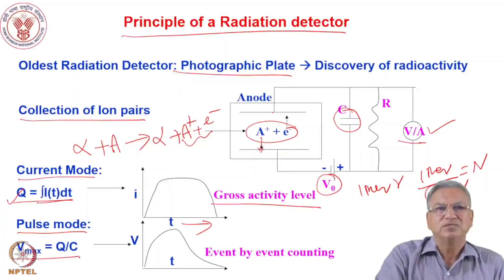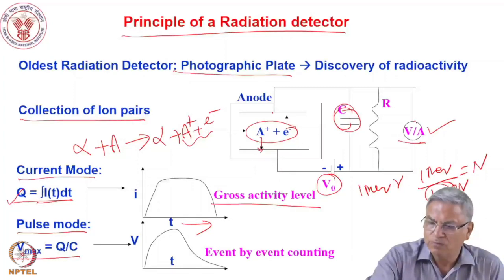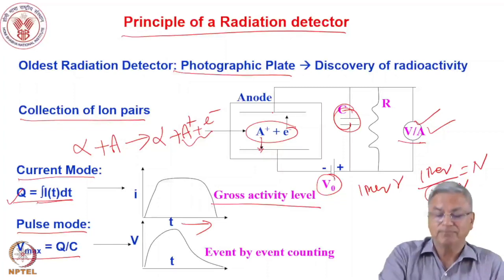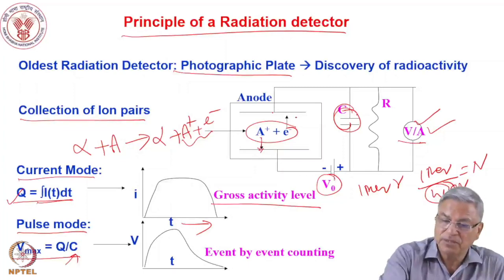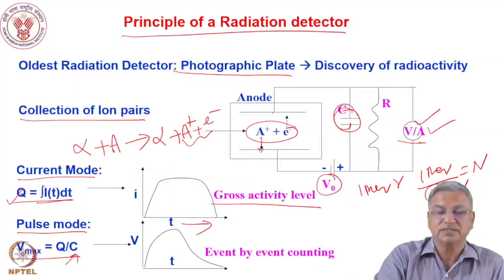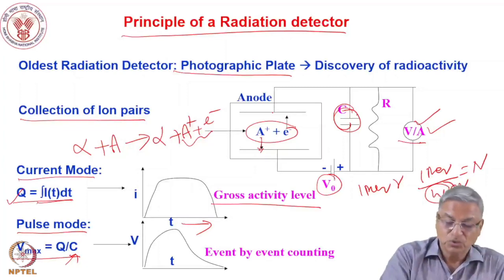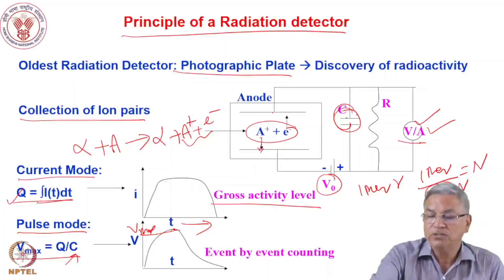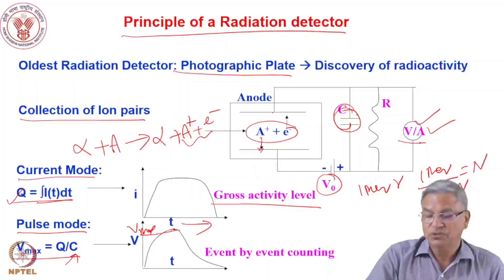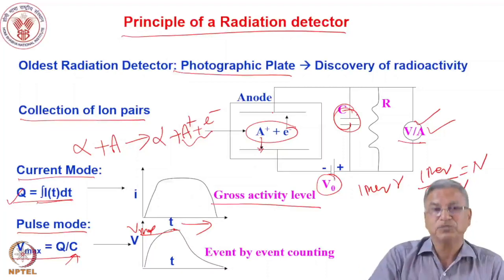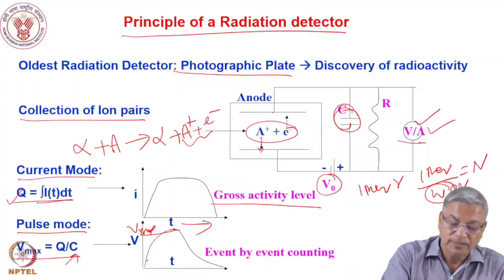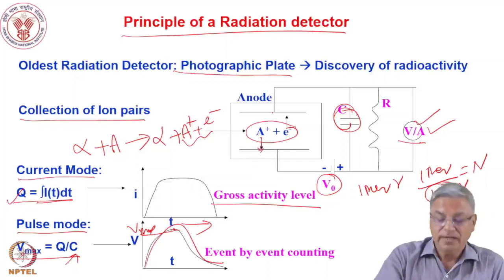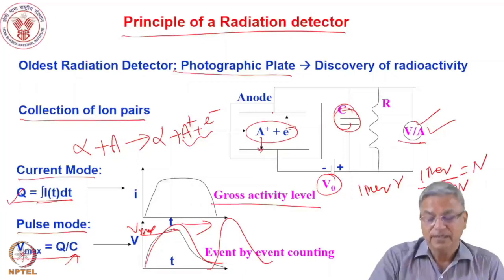Whatever charge Q is produced, you get a voltage at the voltmeter equal to Q divided by C. The maximum voltage depends upon Q over C, the capacitance of the circuit — not only the external capacitor but also the detector system's own capacitance. The voltage will rise to a maximum and fall down. The rise and fall depend upon C and R; this is called a CR circuit. The detector systems have a series of CRC circuits to get a proper signal. In the oscilloscope the voltage signal will rise and fall down, and it should fall before another event comes so that events can be separated and counted.